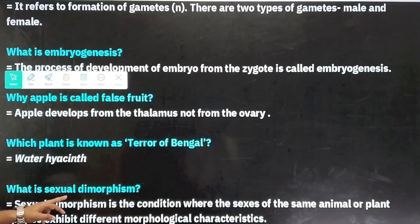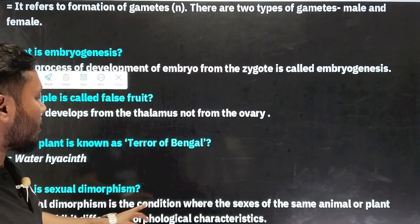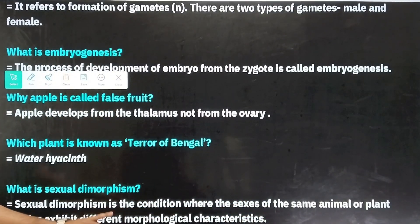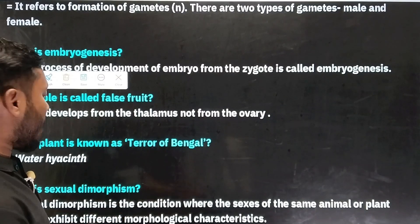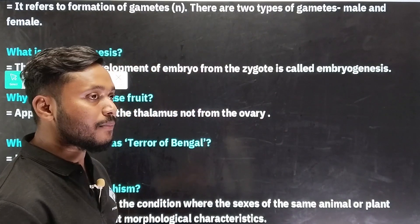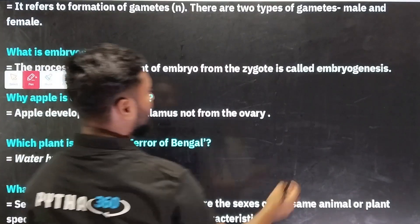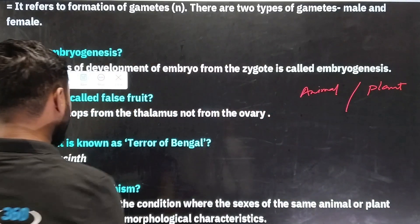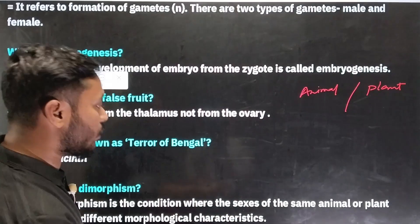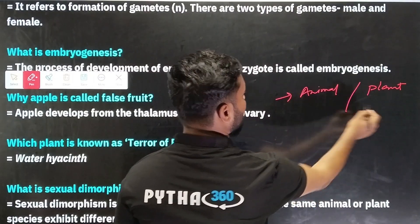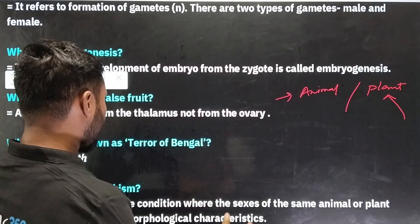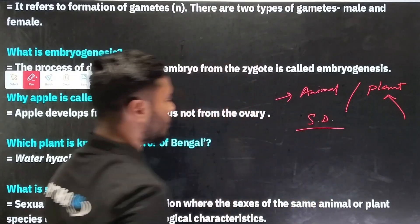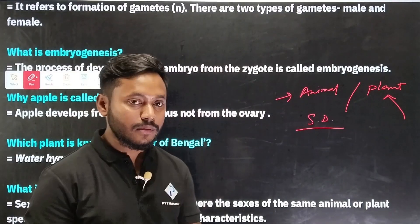What is sexual dimorphism? Sexual dimorphism is the condition where the sexes of the same animal or plant species exhibit different morphological characters. So, if you have male and female of the same species, they are morphologically different from each other.